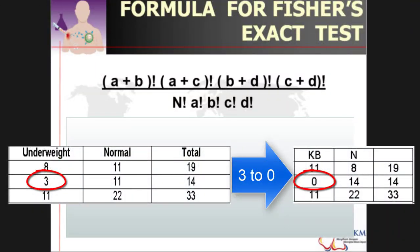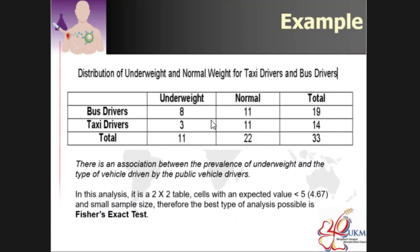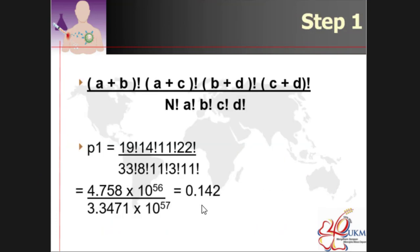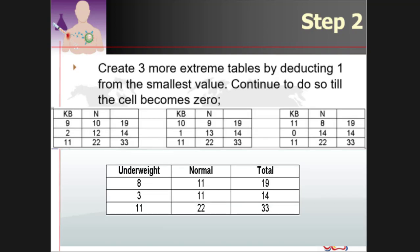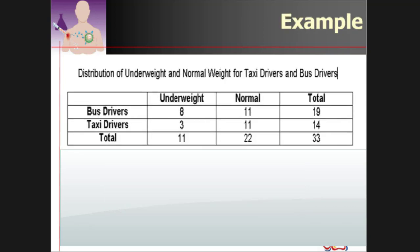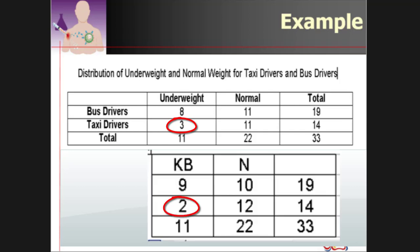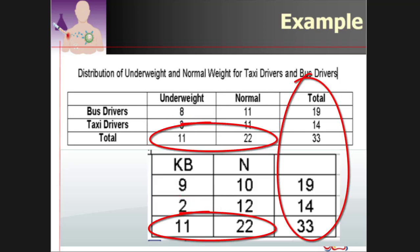You have to do it again and again until one of the cells become 0. How to the cell become 0? Let me explain. So you started with this table just now, right? You get a value of 0.142, already larger than 0.05. But to get the answer for the Fisher exact test, you have to calculate complete all the extreme tables. So you look here, you notice that from 3 become 2, from 2 become 1, from 1 become 0. So we look at the smallest number. Smallest number is 3, right?